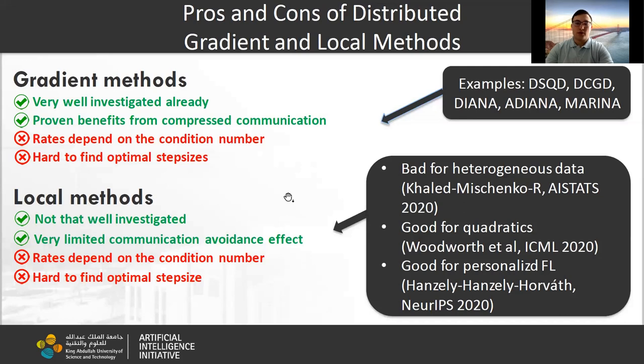Let me first give some brief motivation for our work. One of the most popular methods in distributed optimization are gradient-type methods. Such methods are investigated a lot in recent years, and they can probably benefit from compressed communication. However, the rates depend on the condition number, and it's hard to tune the step size for these algorithms.